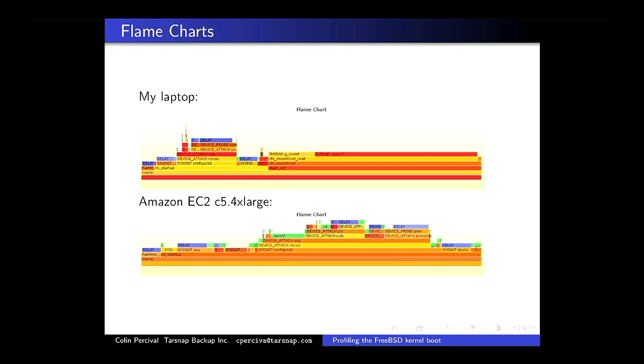My laptop is running ZFS. This is an interesting thing in the FreeBSD kernel: if your root file system is on UFS, we try to mount it and if it's there we don't wait for USB. But if your root file system is on ZFS, we wait for all the USB disks to arrive first, for some reason.